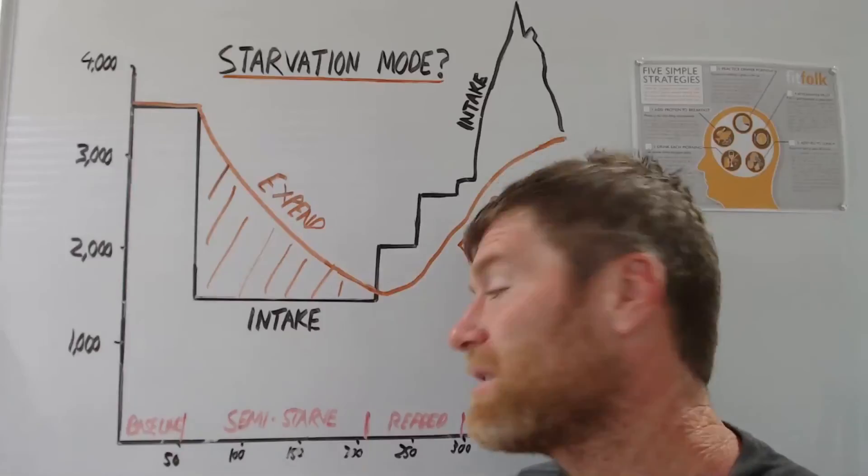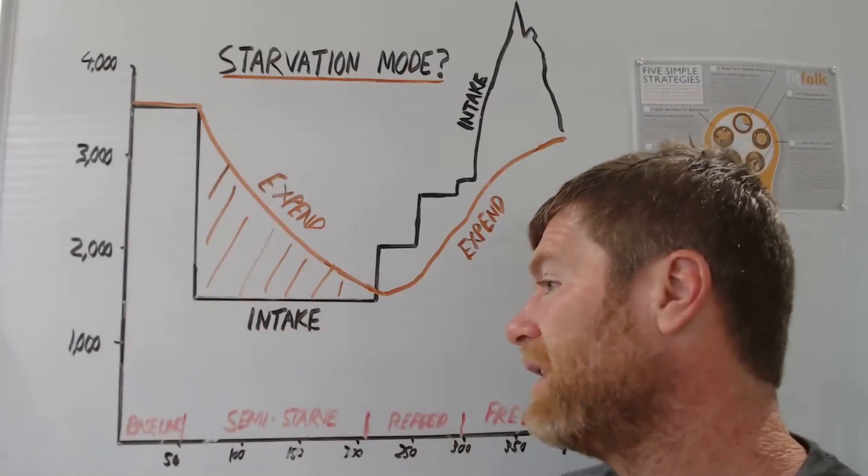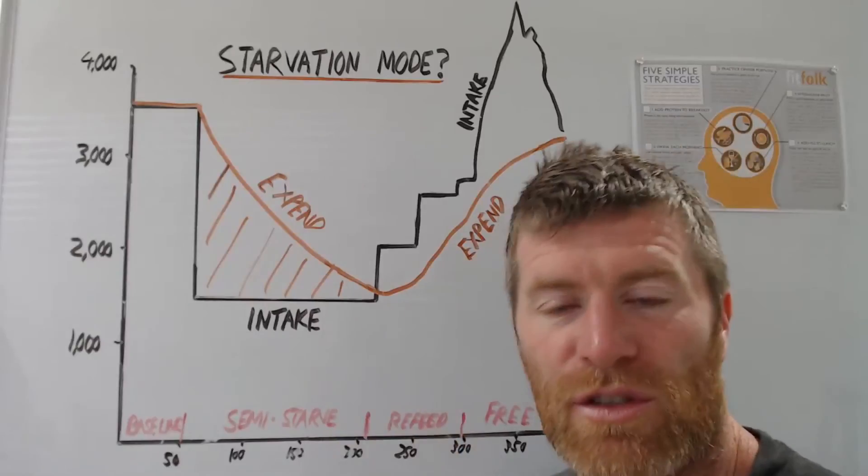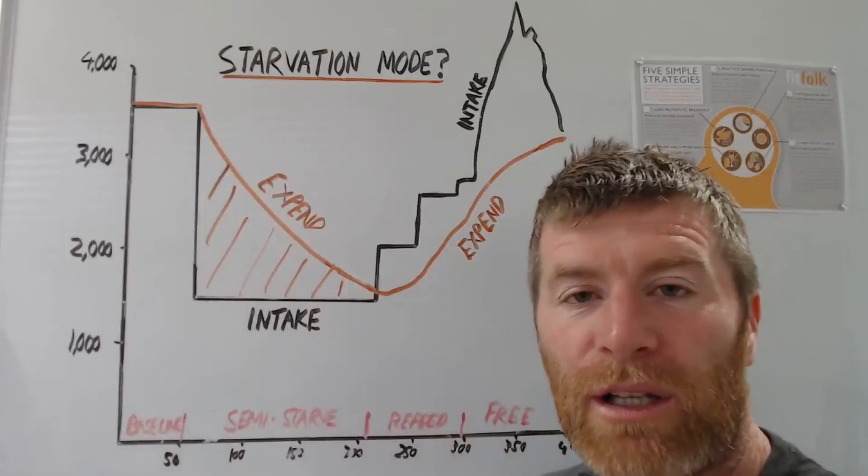What you can do is just be sensible, eat sufficient protein, eat at a sensible meal frequency, do some lifting, do some strength training, get your steps in, do whatever you can to protect your metabolic rate.